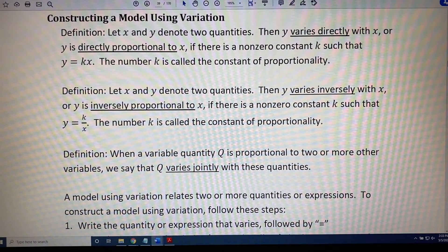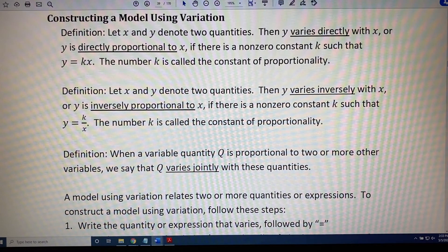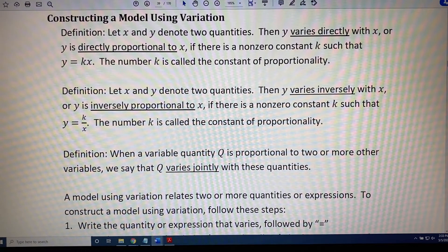Definition one: let x and y denote two quantities. Then y varies directly with x, or said another way, y is directly proportional to x, if there is a non-zero constant k such that y equals kx. The number k is called the constant of proportionality.